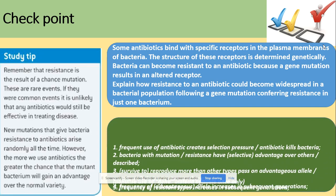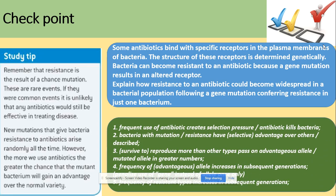Key things to cover: frequent use of antibiotics creates selection pressure. The antibiotic will kill bacteria, but bacteria with the mutation will have an advantage — they survive and reproduce more than other bacteria. Once they reproduce, they pass on the advantageous mutated allele in higher numbers. So the frequency of this advantageous allele increases over generations, and as a result the frequency of resistant bacteria increases. That's your model answer for that topic.